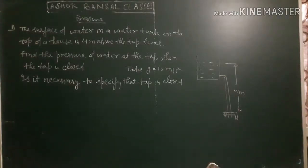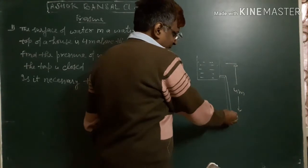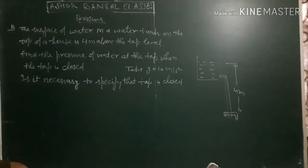The surface of water in a tank on top of a house is 4 meters above the tap. Find the pressure at the tap when the tap is closed.